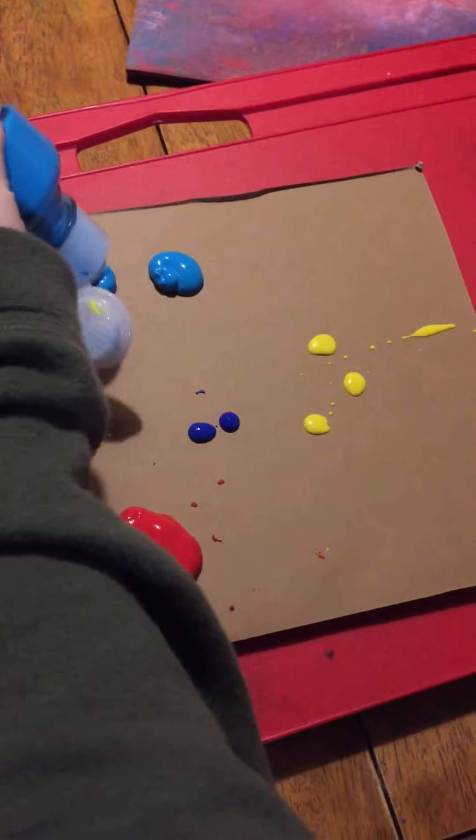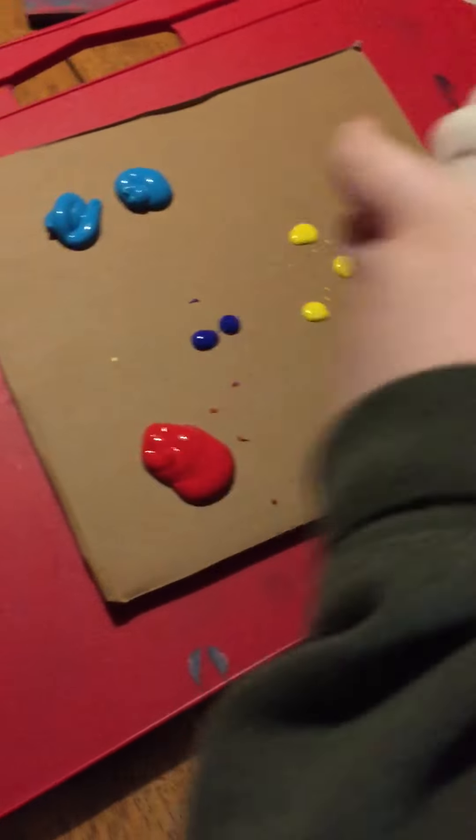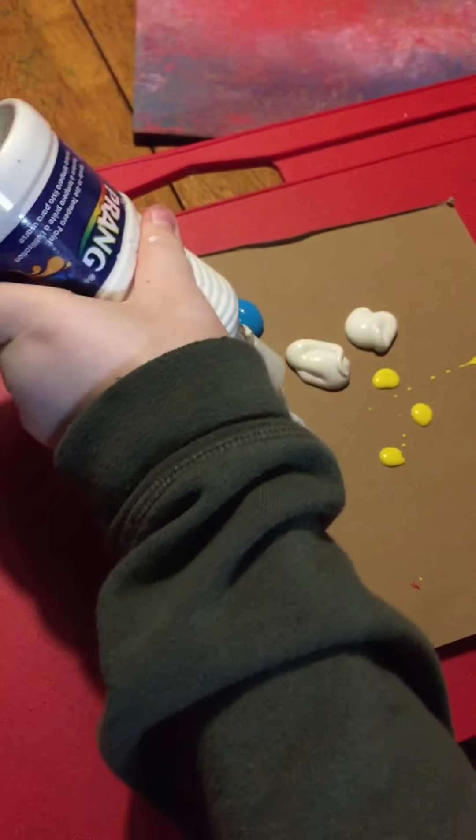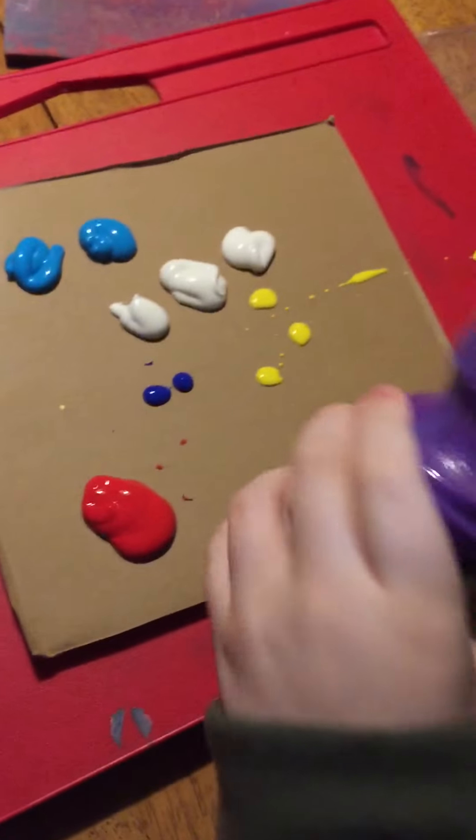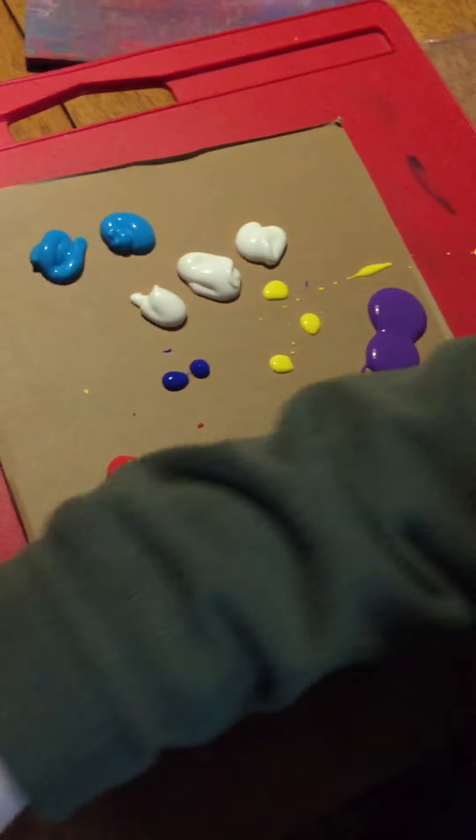You're just gonna add some dots of paint all around. One, two, three. Now again, one, two, three. Just like that, and then we're gonna do the same thing on the other one. One, two, three. Okay, that's good, got all the colors.